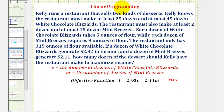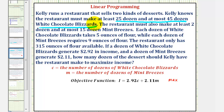Our next step will be to list all of the constraints, which will be a system of inequalities. Once we have the constraints, we'll graph the solution to the system of inequalities, which will give us what's called the feasible region. Then we'll find the coordinates of the corners or vertices of the feasible region, and using those points, we can determine what C and what M would maximize the income. Looking at the first statement, the restaurant must make at least 25 and at most 45 dozen white chocolate blizzards, which means C must be greater than or equal to 25 and less than or equal to 45.